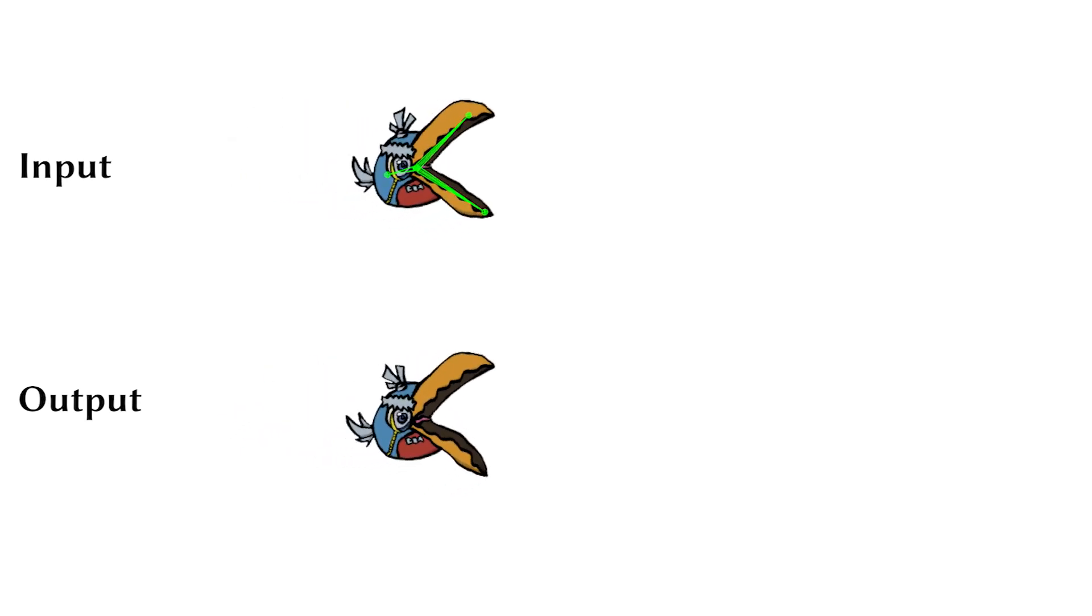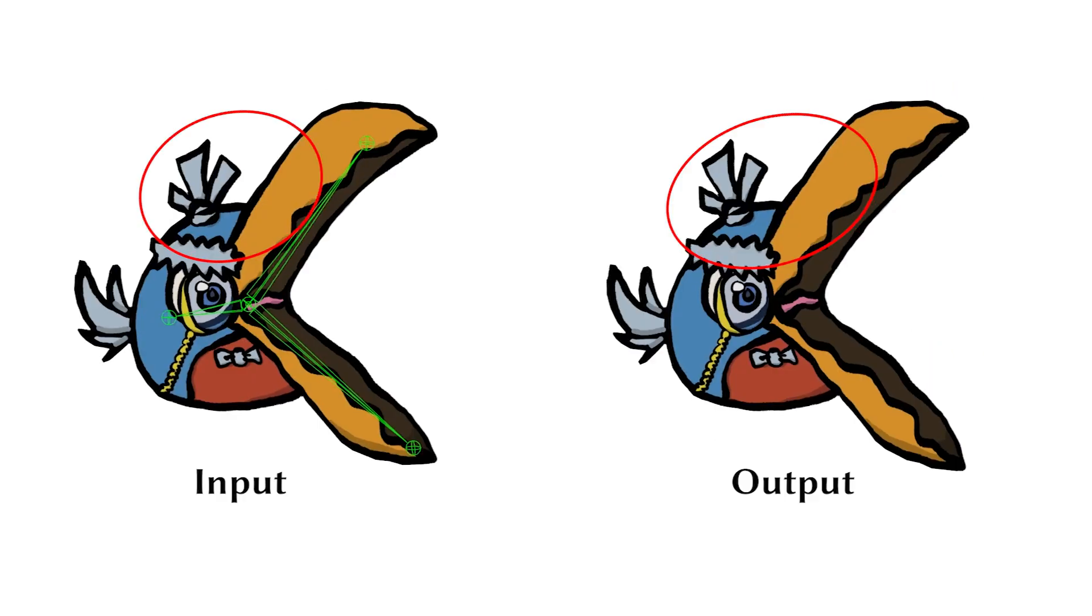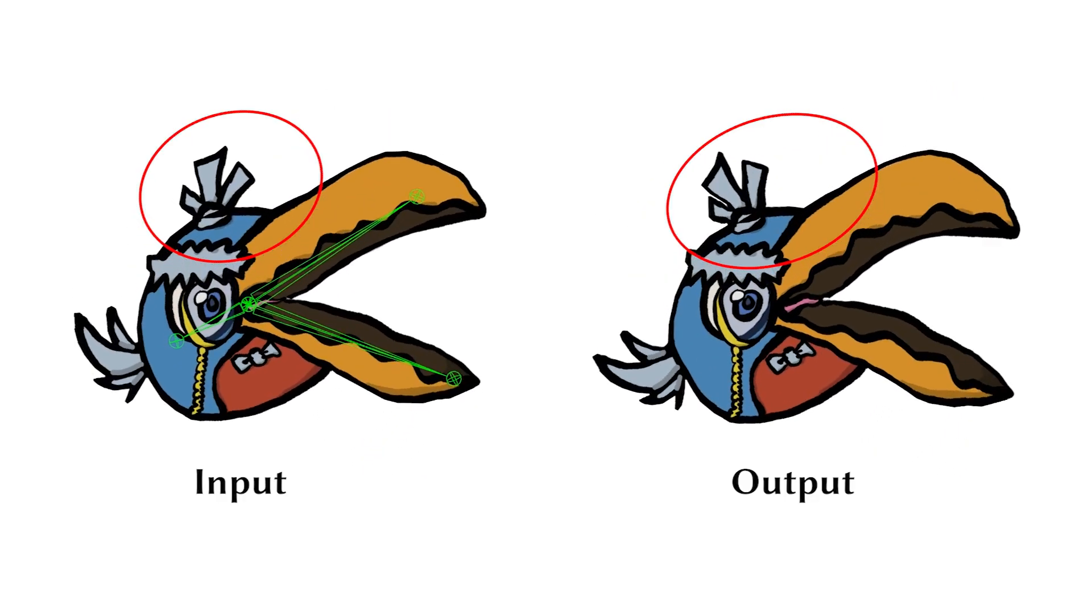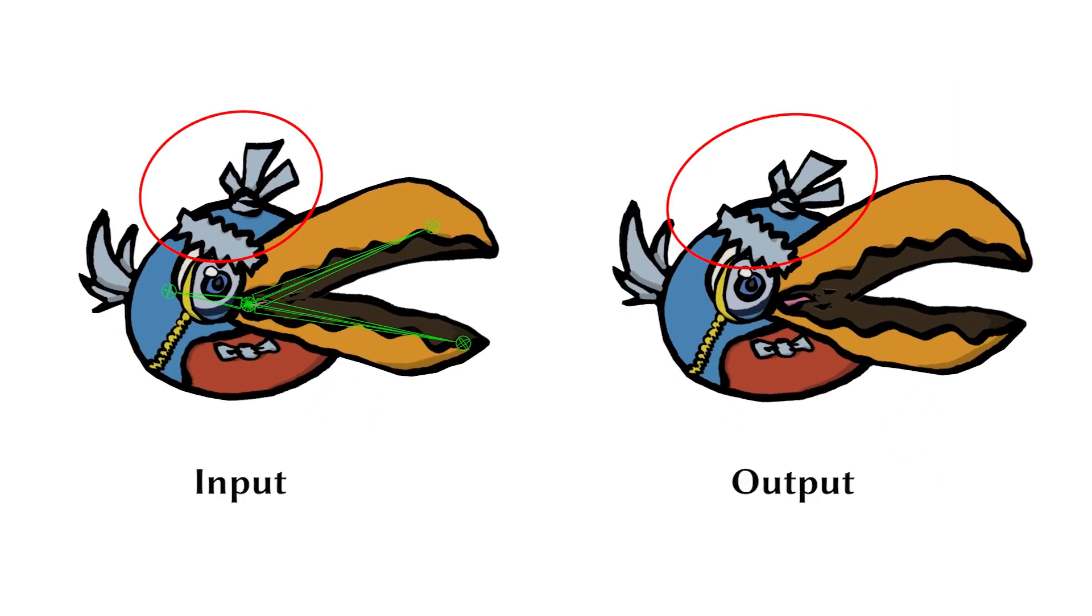Our method can be applied to any rig type. The bird in this example is rigged with three bones. Notice our method adds high-frequency motions to the feathers that could not be achieved by moving the bones.